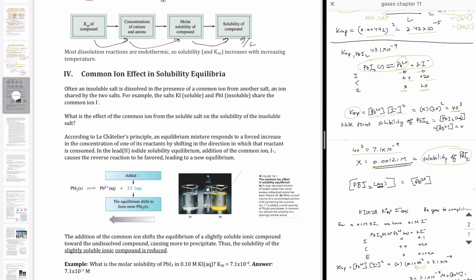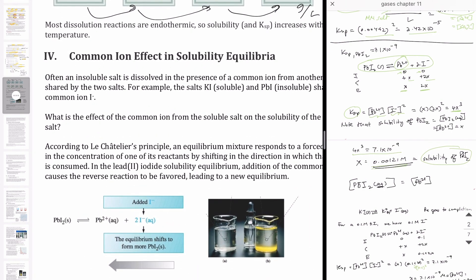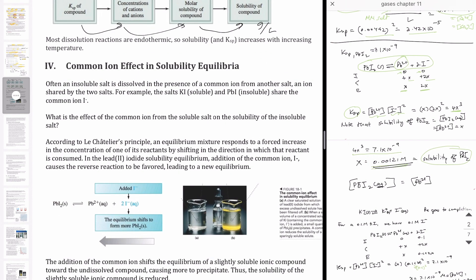Now that we know how to calculate the solubility of insoluble salts in pure water, we want to consider how other ions present in the same solution affect solubility — because most of the time you're not going to just have your salt. The first thing we're going to look at is called the common ion effect: if another ion in solution is the same as an ion in your insoluble salt, how does that affect its solubility?